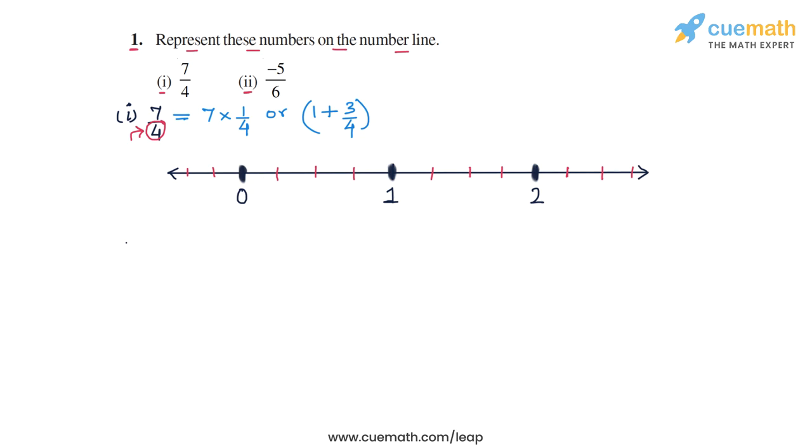Now it's easy to plot 7 by 4. So as I said, 7 by 4 can be interpreted as 7 times 1 by 4. So you make 7 jumps of 1 by 4 like this, and you reach here, this number. So this marking here represents 7 by 4.